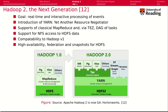We still have HDFS as our storage component, but we now have a cluster resource manager which provisions the compute resources and works in concert with the storage. And on top of YARN, we have an execution engine that is able to process any kind of data flow processing. MapReduce is one part of data flow processing that can still be run, but we can also run additional software.